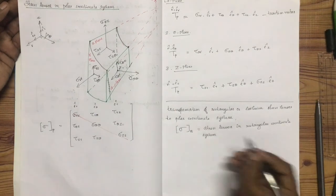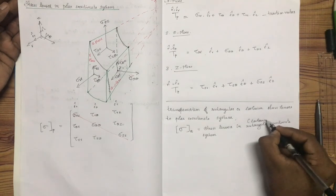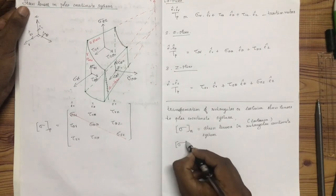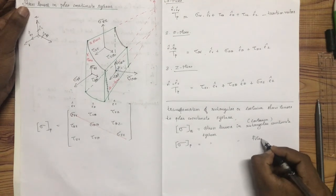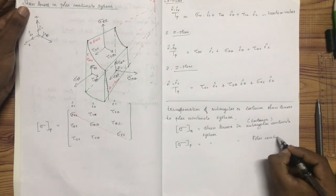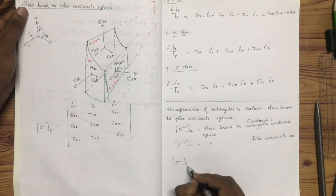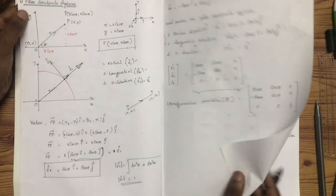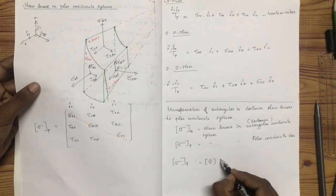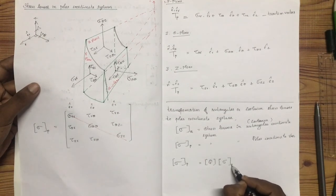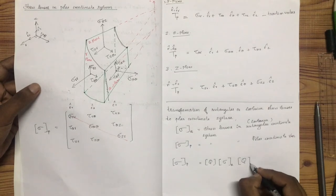I will call this the Cartesian coordinate system. This is the stress tensor. This is the polar coordinate system. This is the stress tensor and this is the transformation matrix. This is the rectangular coordinate system.